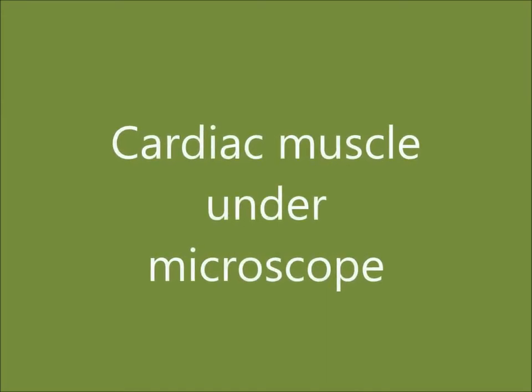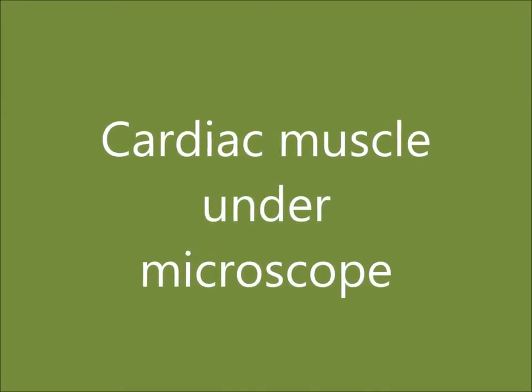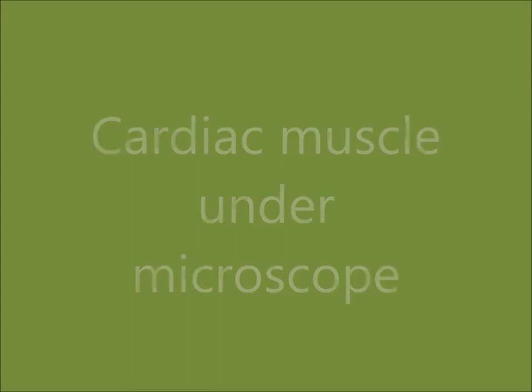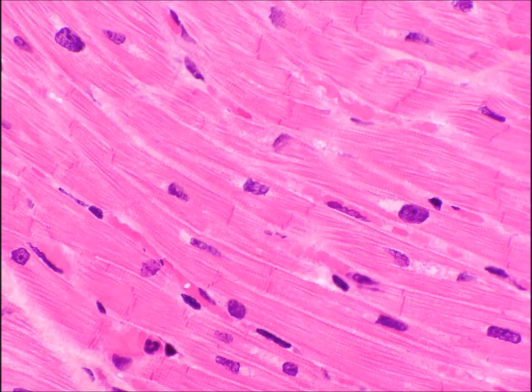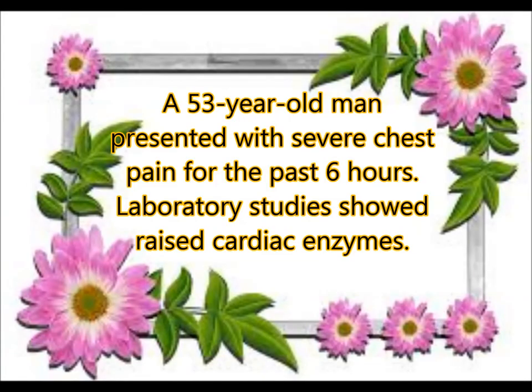Cardiac muscle under the microscope shows branching cells with central nuclei. They show striation. Because hematoxylin and eosin stain is used for normal microscopy, the eosin stains the cytoplasm pink and the nuclei are stained blue with the hematoxylin.